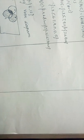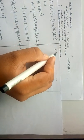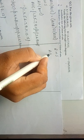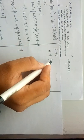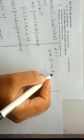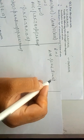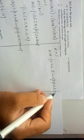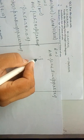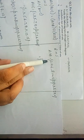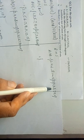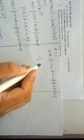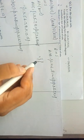Now consider the right-hand side, which is (A ∩ B) ∪ (A ∩ C). First, we will solve A ∩ B. A = {2, 4, 6, 8, 10, 12} and B = {1, 3, 5, 7, 9, 11}. None of the elements of set A and B are common, so A ∩ B will be an empty set.